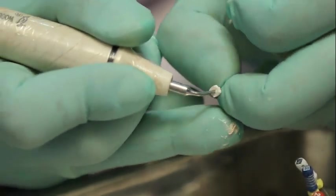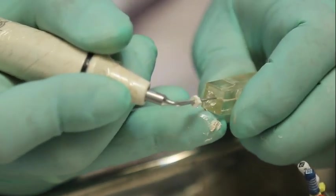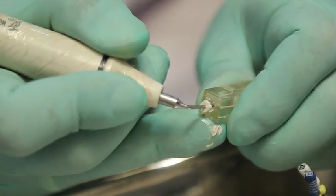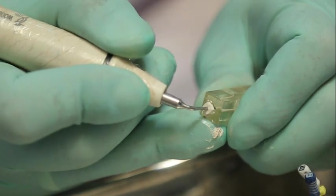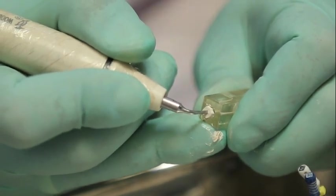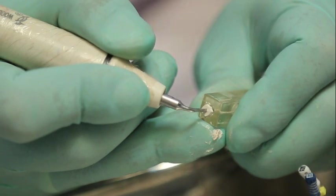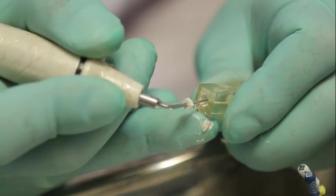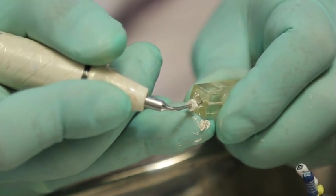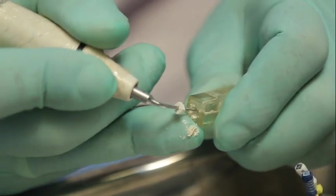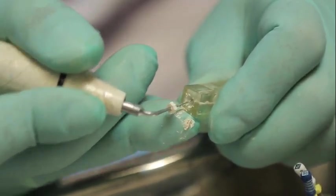One advantage of ultrasonic compaction is that once you take your foot out of the foot control, the temperature will drop within seconds itself. Then hold it for 5 to 10 seconds to compensate for the shrinkage without heating. Then if you want to remove the excess coronal GP, you can give a slight lateral pressure so that excess coronal GP will be removed.